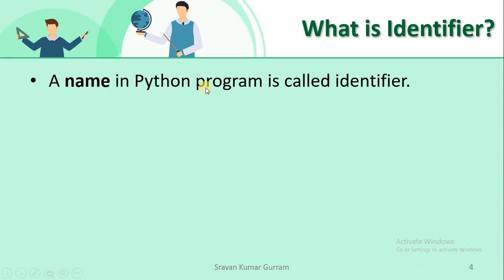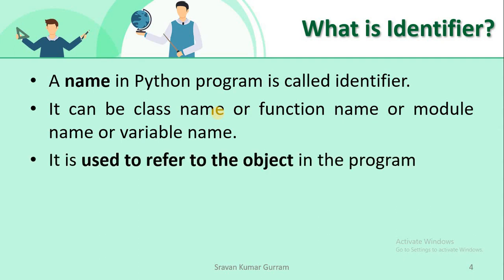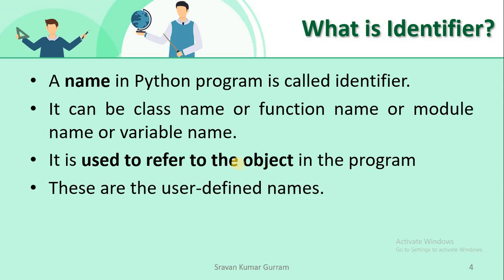An identifier is a name in Python programs. That name may be a class name, function name, module name, or variable name. An identifier is used to refer to the object in the program. We assign some values, and those values are treated as objects in Python. To refer to those objects, we give some name. These identifier names are user-defined — the user can give any name depending on the requirement, but we need to follow some rules.